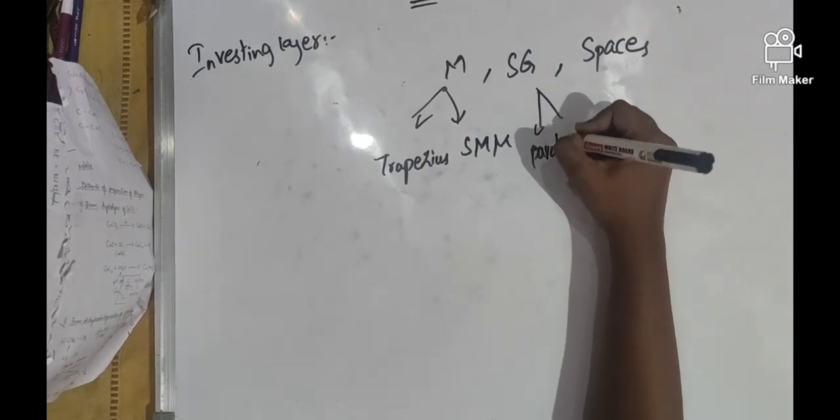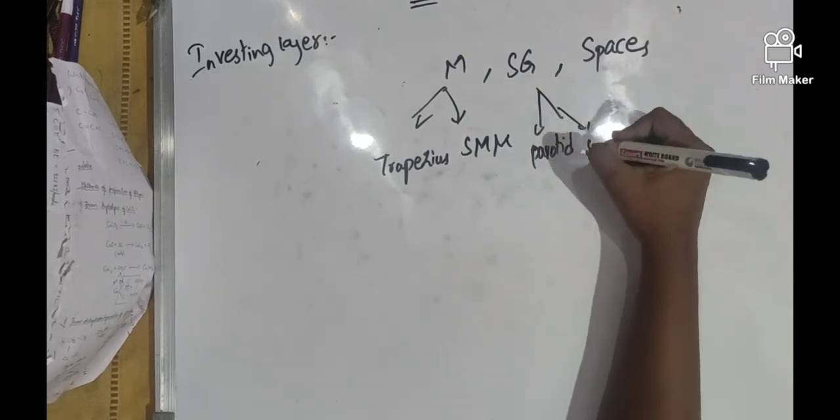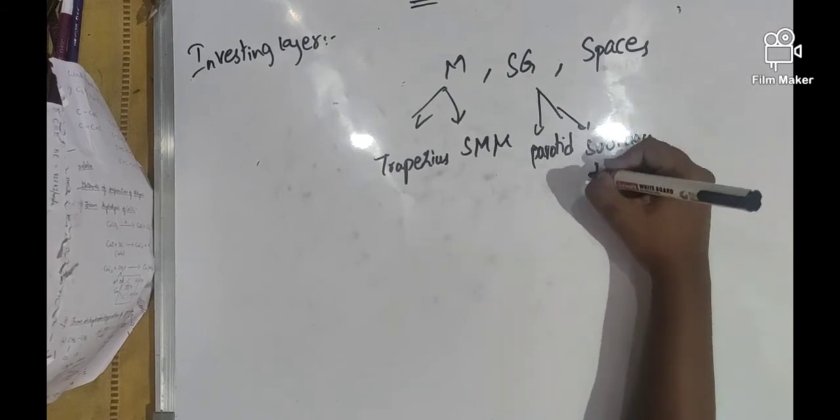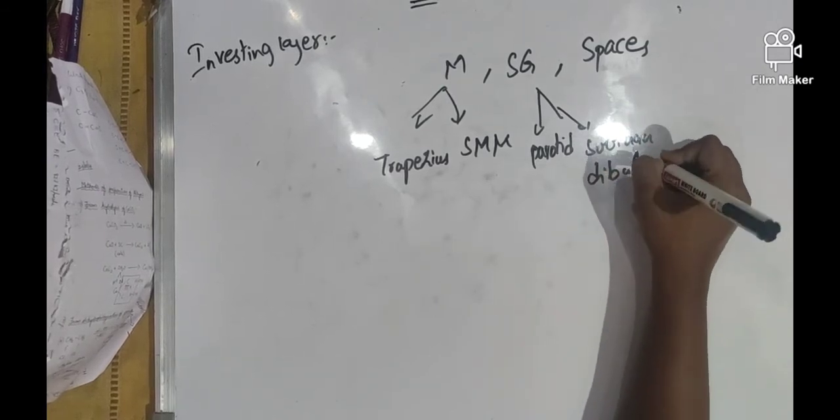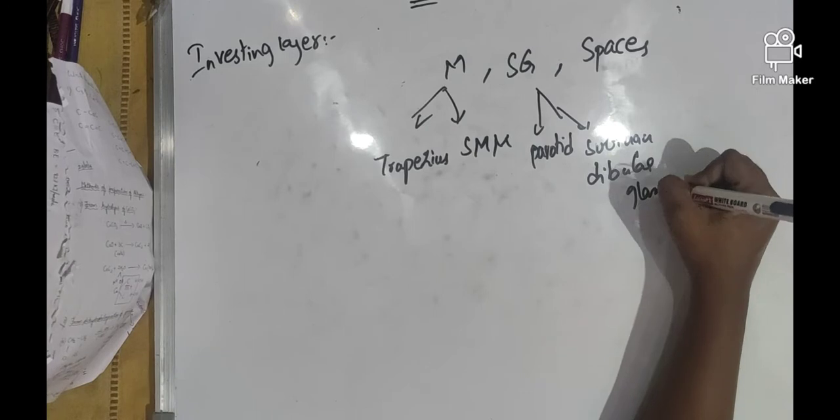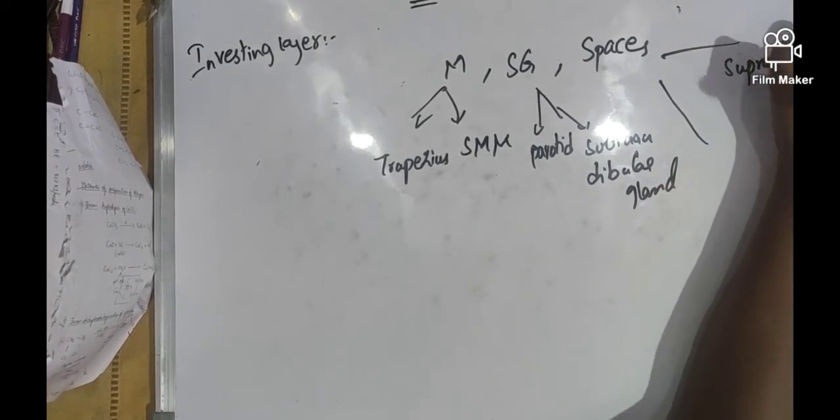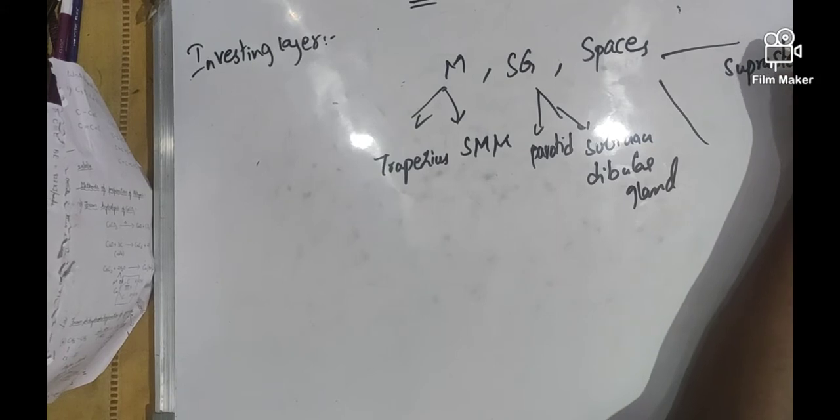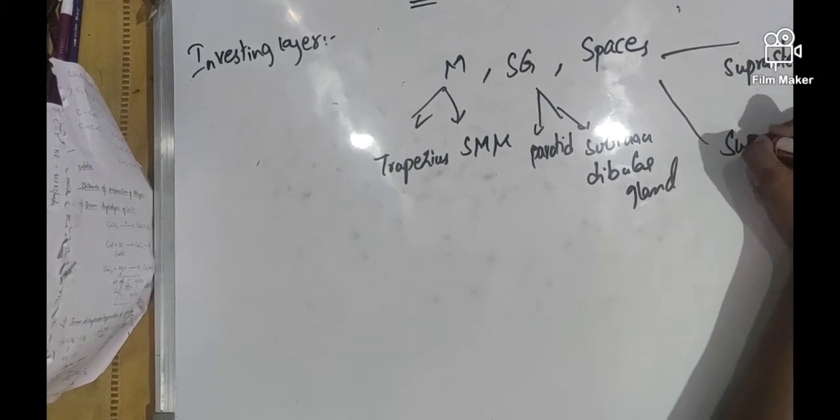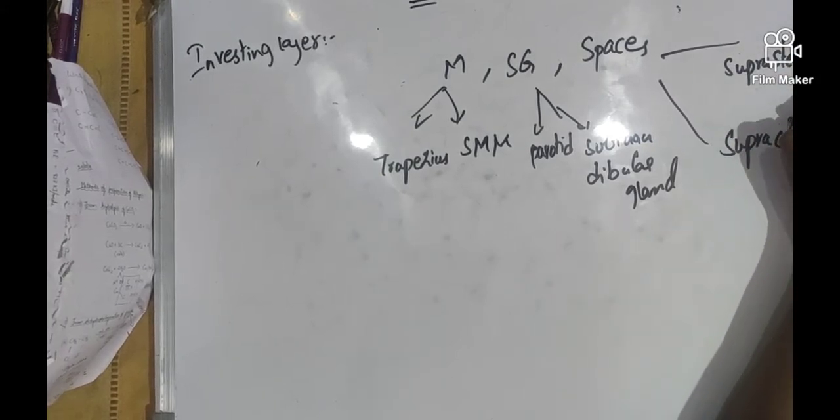I previously mentioned the parotid, and the deep cervical fascia also encloses the submandibular gland, the parotid gland, and spaces: suprasternal space above the sternum and supraclavicular space above the clavicle.